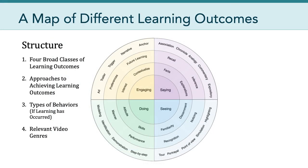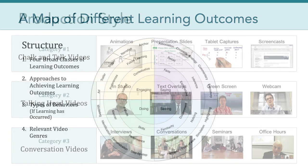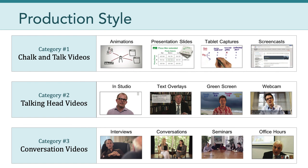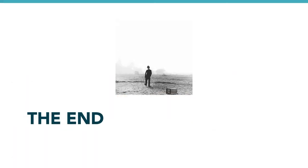Before we wrap up, I want to make the point that this map of different learning outcomes is simply a guide. The concepts in this map are not black and white, and many videos blur the lines between outcomes and genres — and that's okay. I still think this is a useful framework for thinking about different genres of video. Finally, it's important to note that different genres of video can be produced using different production styles — one production style doesn't have a lock on one genre. Okay everyone, we're out of time for today. Have a great week, and I'll see you in Canvas.